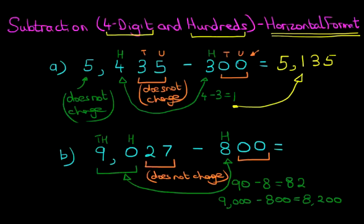But that looks a little bit long-winded. I prefer to use the shorter method. So therefore, 9,027 minus 800 is 8,227. Now in this example, both the thousands and the hundreds changed.